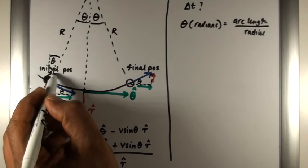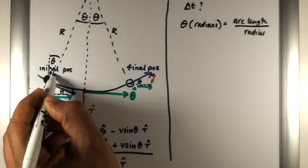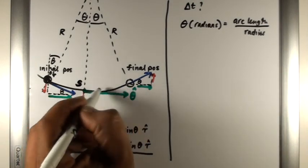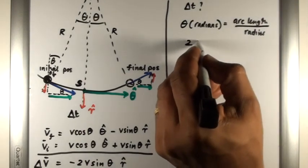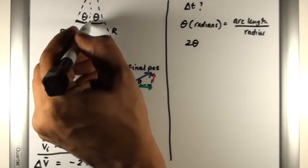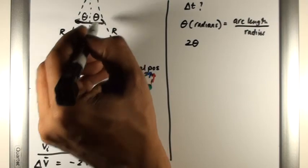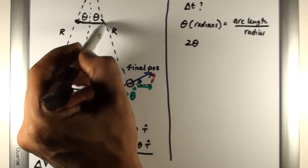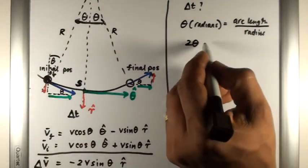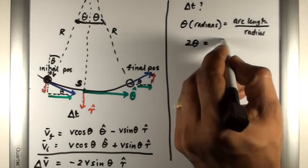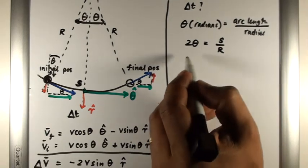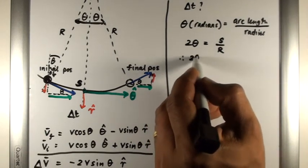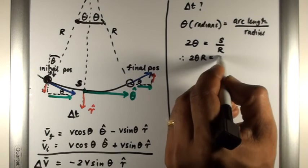If we say that the length of the black line is S, the arc length, we know that 2 theta—2 theta, because we're going from here to there, that's an angle of 2 theta—is going to equal S over R. So therefore, 2 theta R equals S.